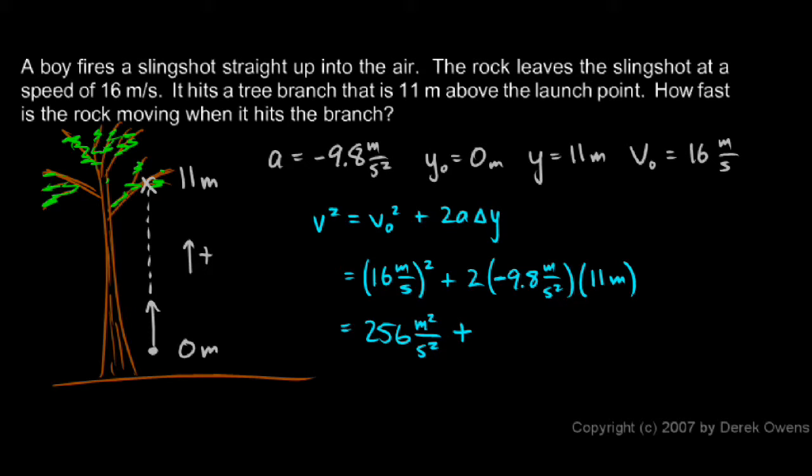Plus, now look at the units on my next term. I have meters times meters. That's meters squared per second squared. That's also going to be in meters squared per second squared. And I have 2 times negative 9.8 times 11, which is equal to negative 215.6 meters squared per second squared.